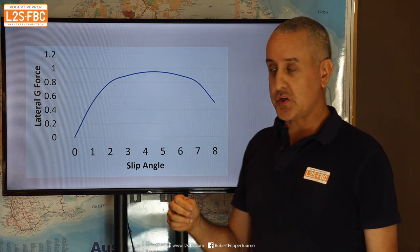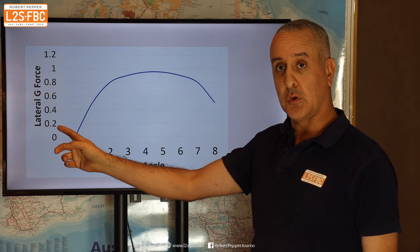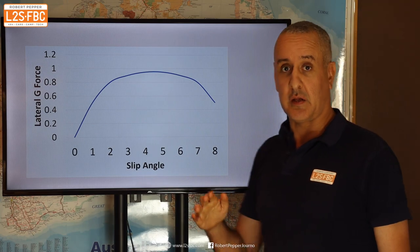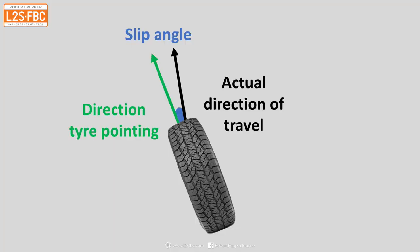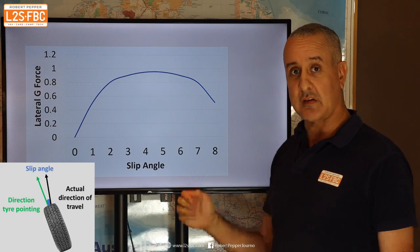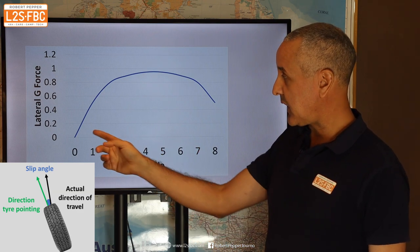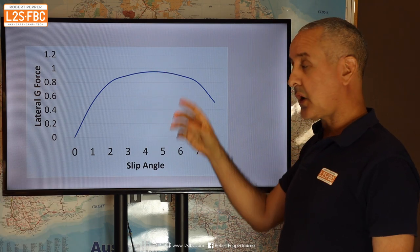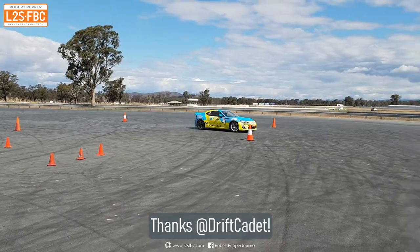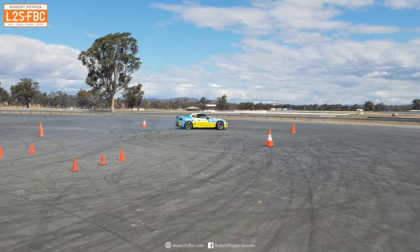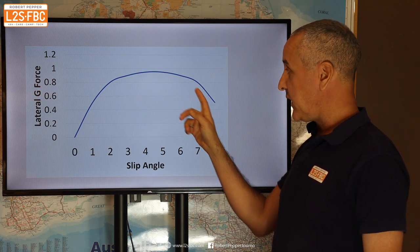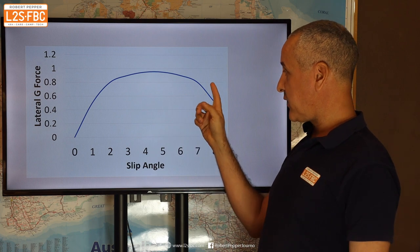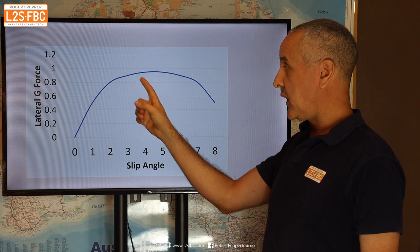This is what I mean about the transition in terms of slip angle. This graph shows lateral force applied to a tyre in G against slip angle — the angle the tyre makes relative to the direction of travel. Most high-performance tyres can reach around 1G lateral force. Around 4–5 degrees of slip angle tends to be the maximum; beyond that, grip starts to fall off. Drivers who drift cars operate in the high-slip-angle, lower-grip area. This is also why a vehicle drifting on bitumen is slower than one that isn't — you're in a lower-grip region than at the ideal slip angle.